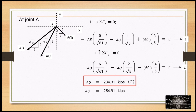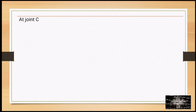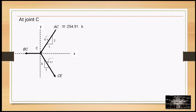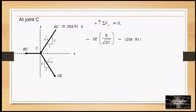AC equals 254.31 kips in compression — we revise our assumption. At joint C, the unknowns are BC and CE. Summation of forces along y equals 0: negative CE times (6/√37) minus 254.91 times (2/√5) equals 0. Solving, CE equals 214 kips in compression — we revise our assumption.